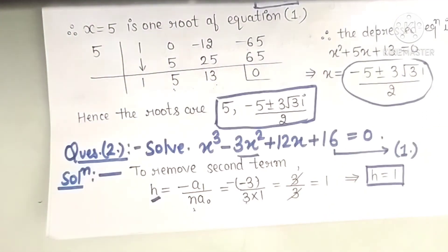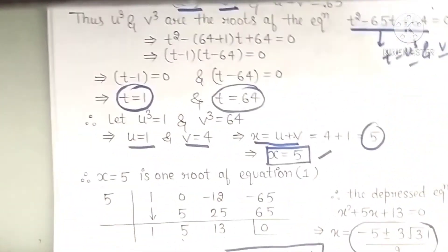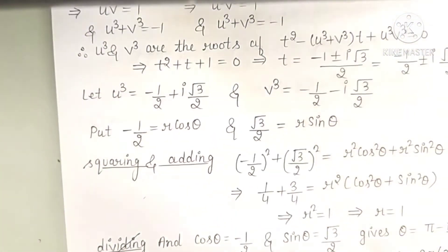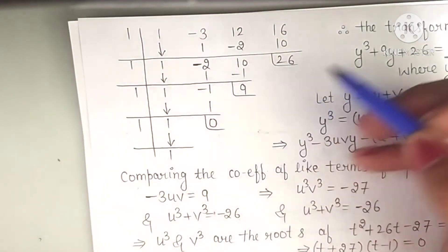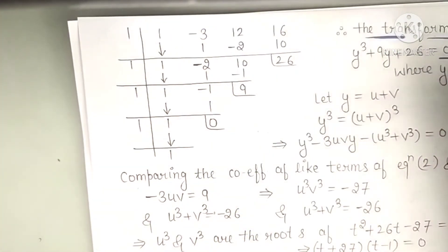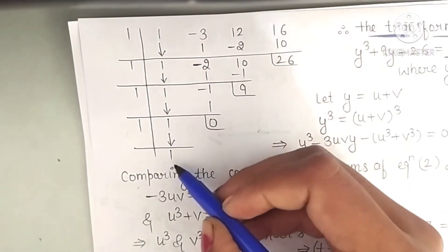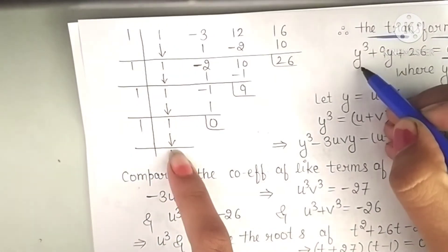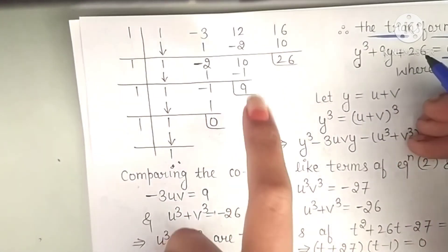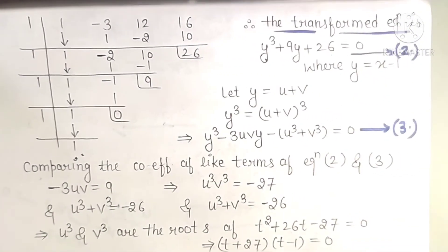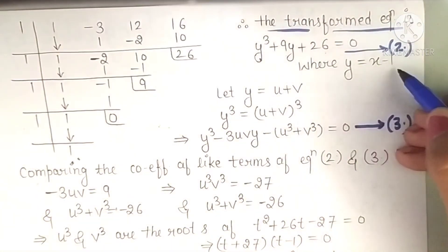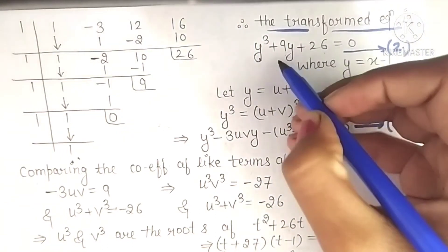So we need to diminish the roots by 1, which means we remove the square term using the transformation x = y + 1. We pick the coefficients and form the transformed equation. The transformed equation becomes: y³ + 0·y² + 9y + 26 = 0. We diminish the roots by 1, substituting x minus 1, and this is our new equation with no square term.